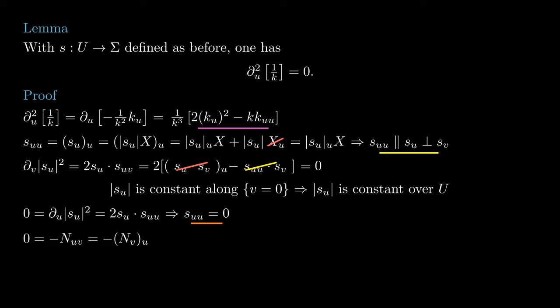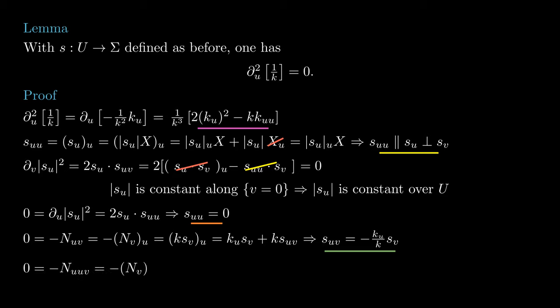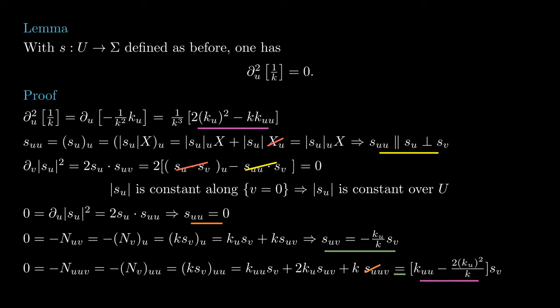Finally, nvu equals zero, and by our choice of coordinates, nv equals minus k times sv. Then by the product rule, ku times sv plus k times suv is zero. From here, we deduce that suv equals minus ku times sv over k. We put this aside and differentiate nvu again with respect to u. By the product rule, we get kuu times sv plus twice ku times suv plus k times suv. We proved that suu is zero, and substituting suv, we get kuu times sv minus 2 ku squared over k times sv. The fact that this coefficient vanishes is exactly what we needed to show that 1 over k changes linearly with respect to u.